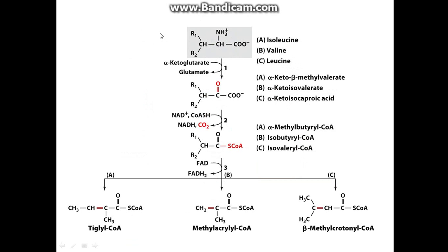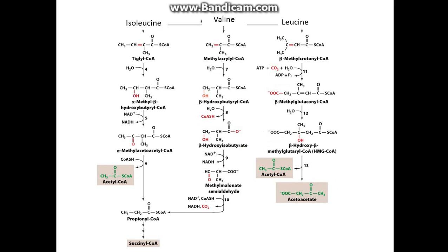So you can see, you get your isoleucine as A, your valine as B, and your leucine as C.